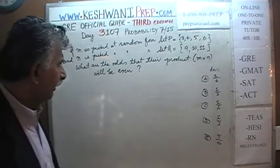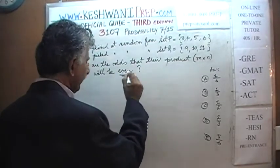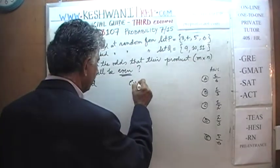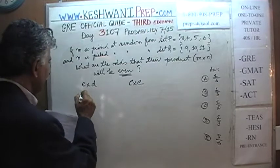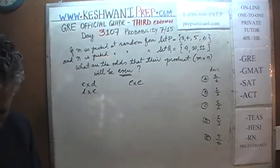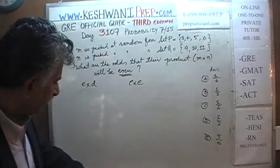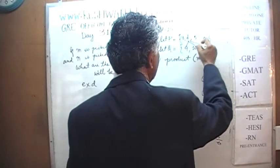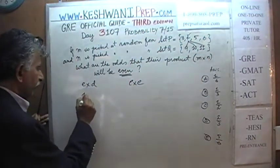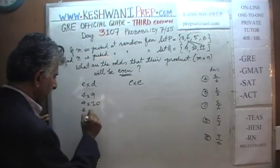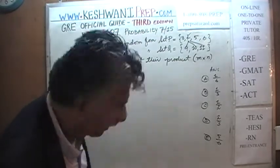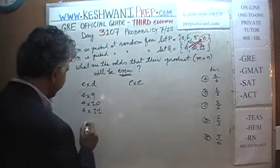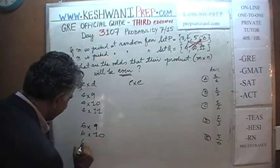Let's take a look at it. If we want the product to be even, we know that even times odd gives us even, and even times even also gives us even. So let's look at the even numbers. We can pick 4 from set P: 4×9, 4×10, 4×11 — those will all be even. Similarly, we have 6 in set P: 6×9, 6×10, or 6×11 — all even.